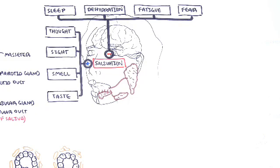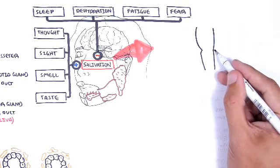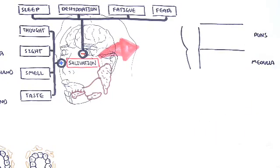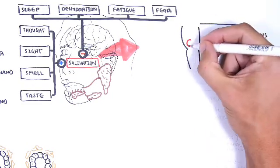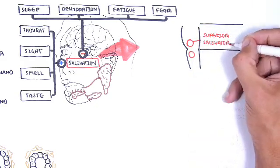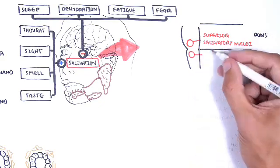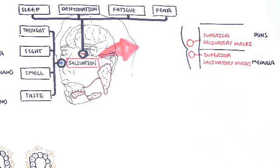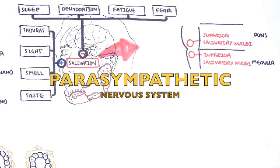The salivary glands have different nerves which supply them. In the brainstem you have the pons and medulla region, and here you can find the superior salivatory nucleus and the inferior salivatory nucleus. The part of the nervous system responsible for the rest and digest response, and so saliva production, is the parasympathetic nervous system.